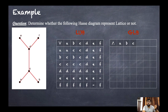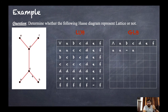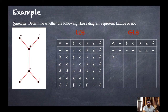Now let us check the GLB table. For a and a it is a. For a and b: the greatest lower bound — you can see there are no lower points below both a and b, so there is no lower bound; a and b's GLB is dash. For a and c it is a, a and d it is a, a and e it is a, a and f it is a.